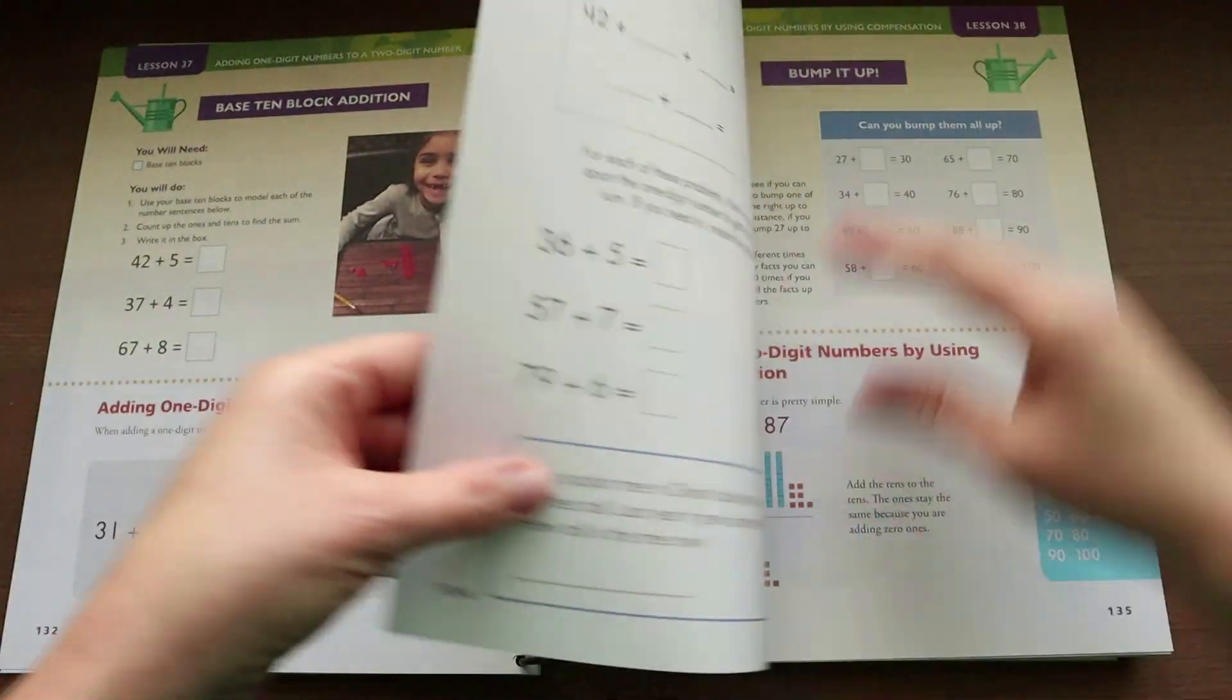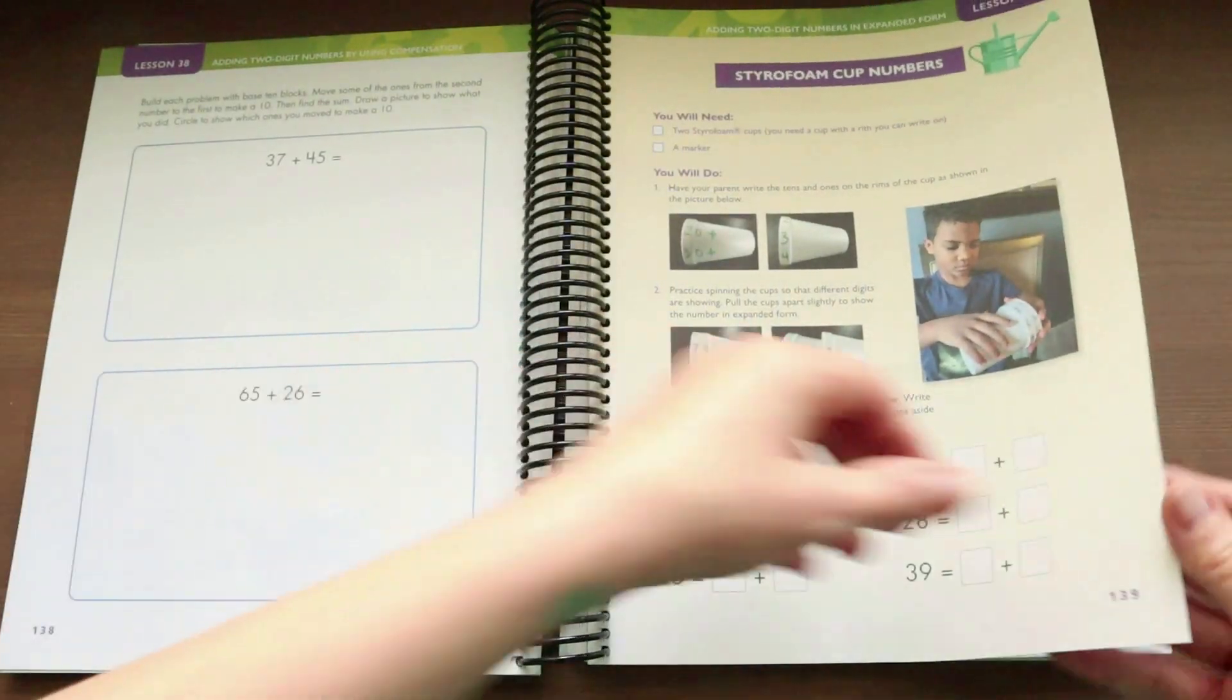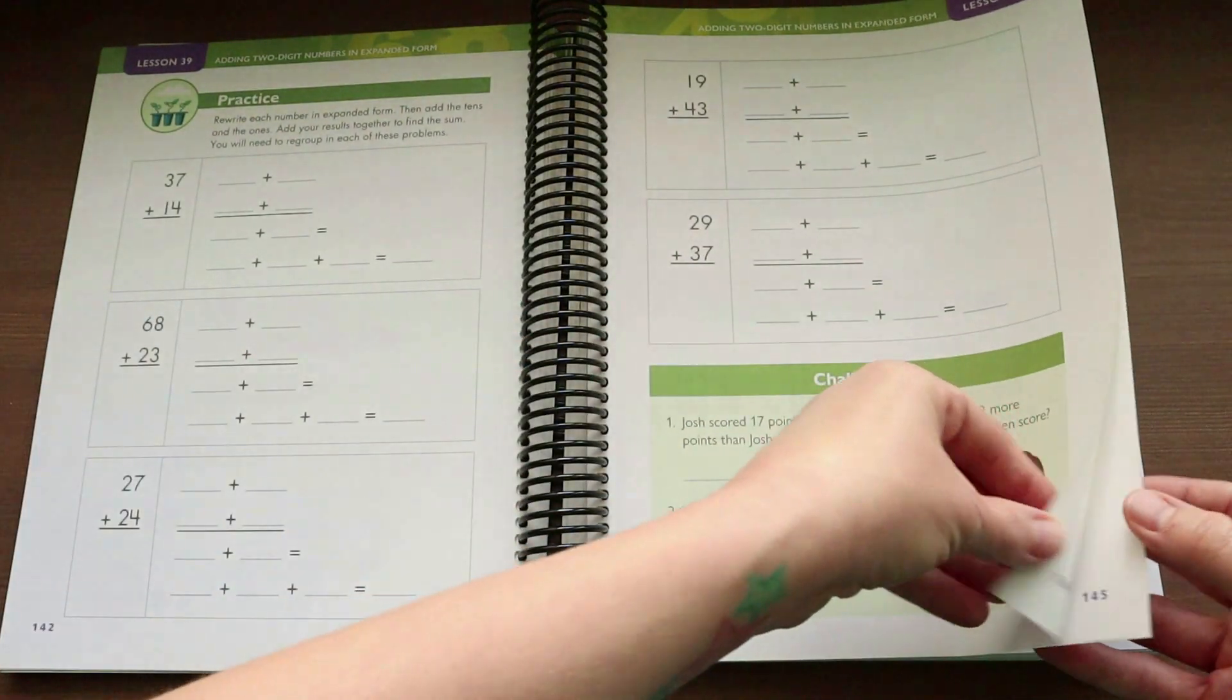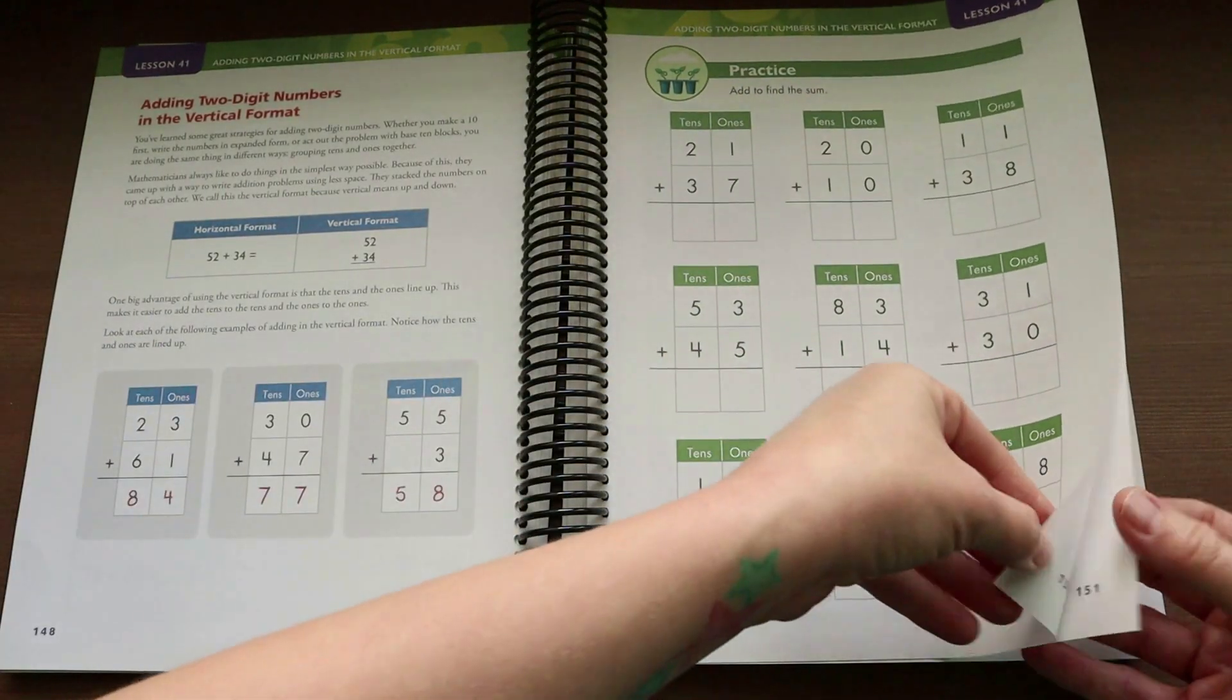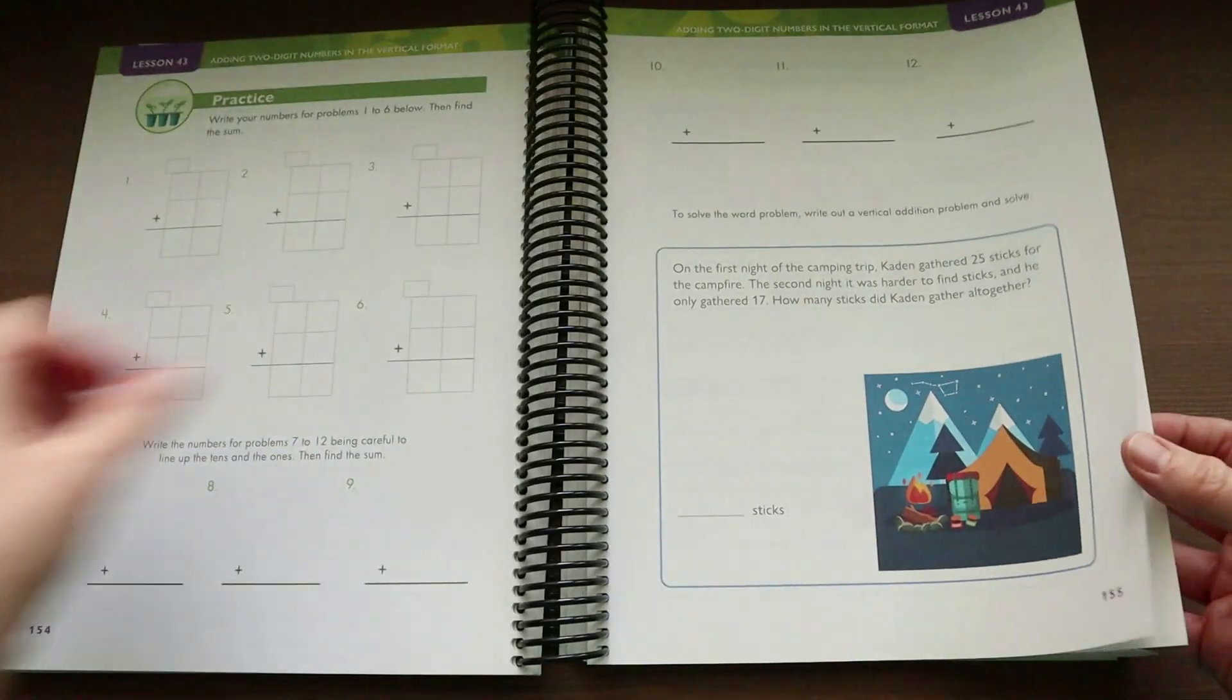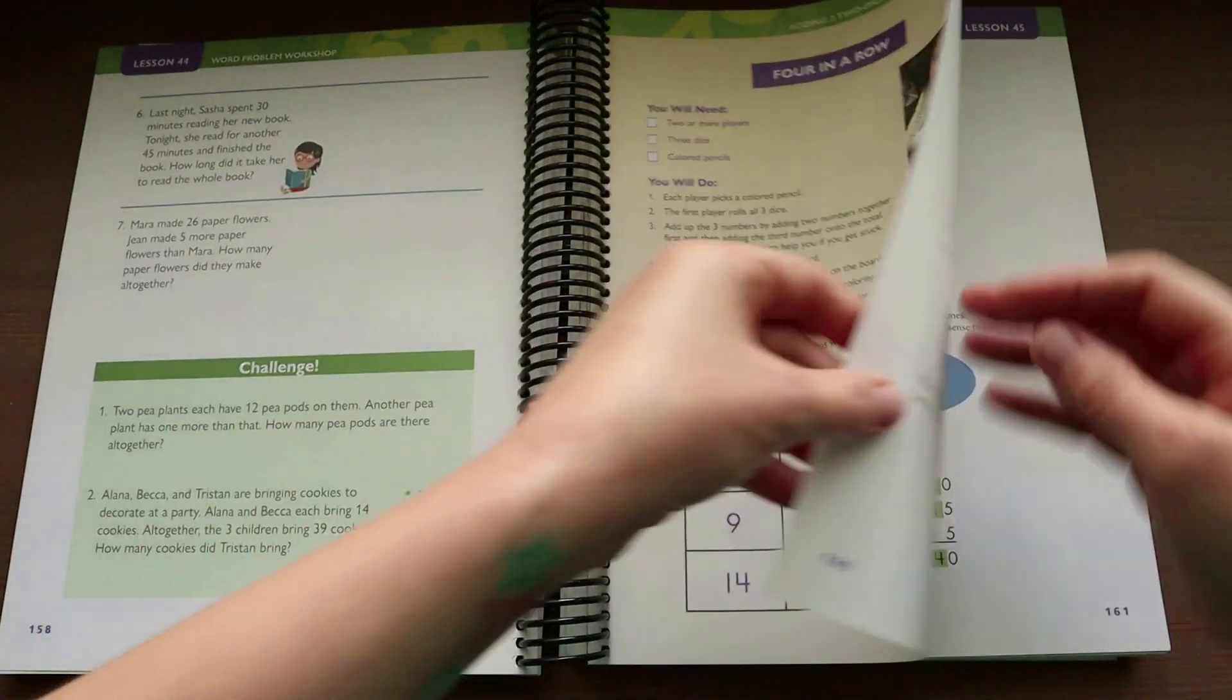The concepts covered in this curriculum are broken up over six units and include place values, two digit addition and subtraction, money and time, three digit addition and subtraction, measurement and data, and then finally geometry. So think shapes, angles, symmetry, equal parts, that kind of thing.